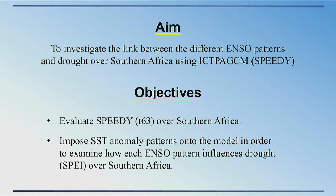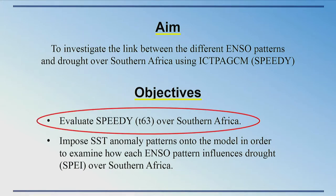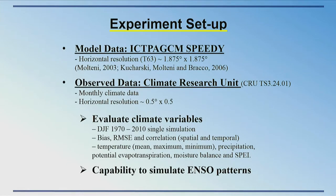For this study I am focusing mostly on the evaluation of SPEEDY. I'm using the T63 resolution of SPEEDY and comparing it to CRU observed monthly data. The first step was to re-grid the SPEEDY data, then I evaluated several climate variables — temperature, precipitation, moisture balance — for the DJF period from 1970 to 2010, and looked at the capability of SPEEDY to simulate the ENSO SPEI patterns.